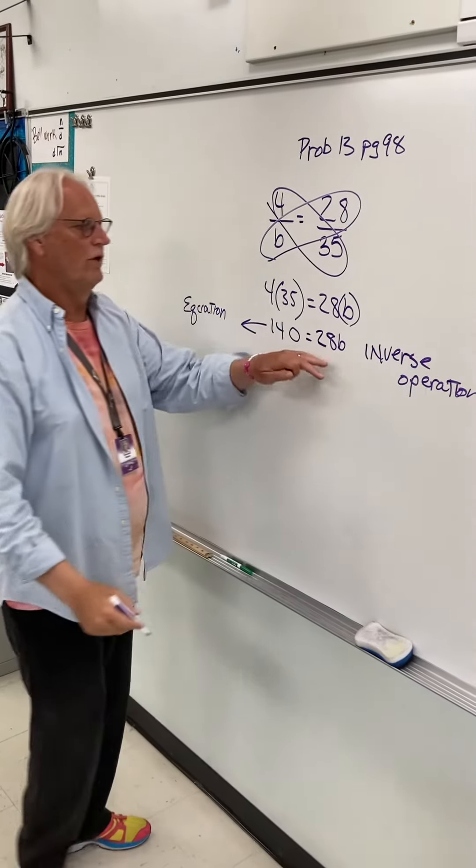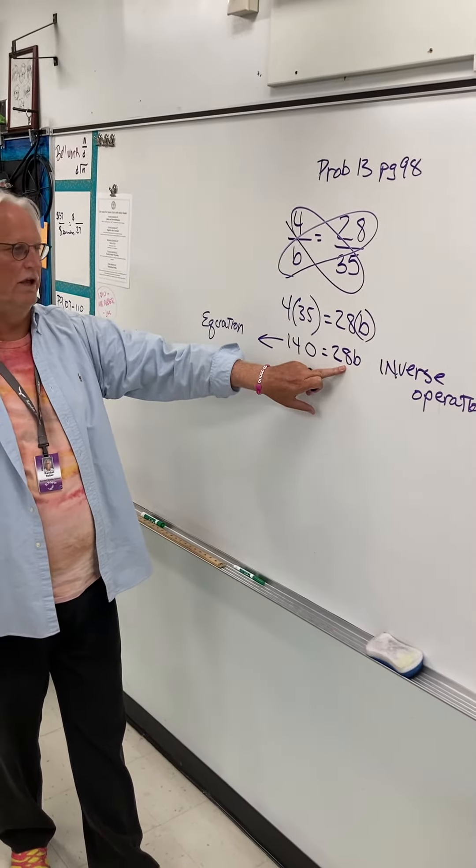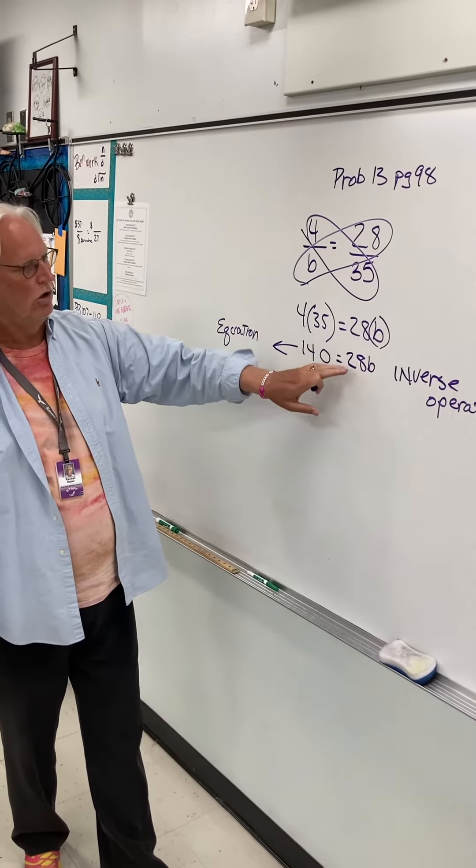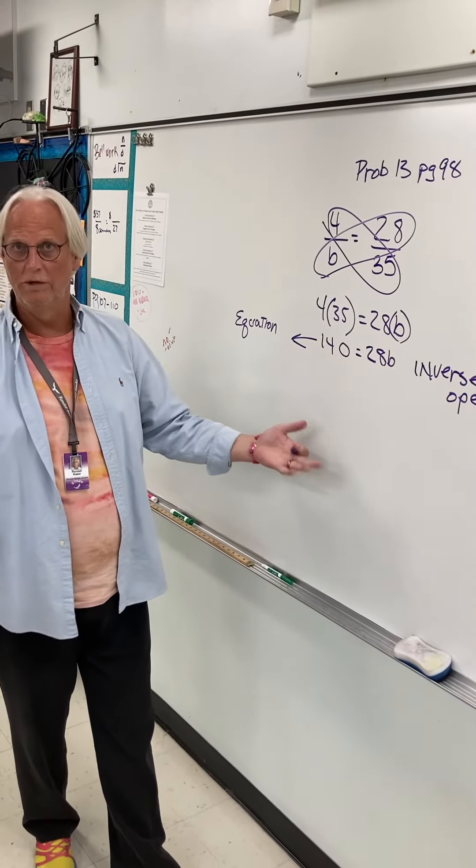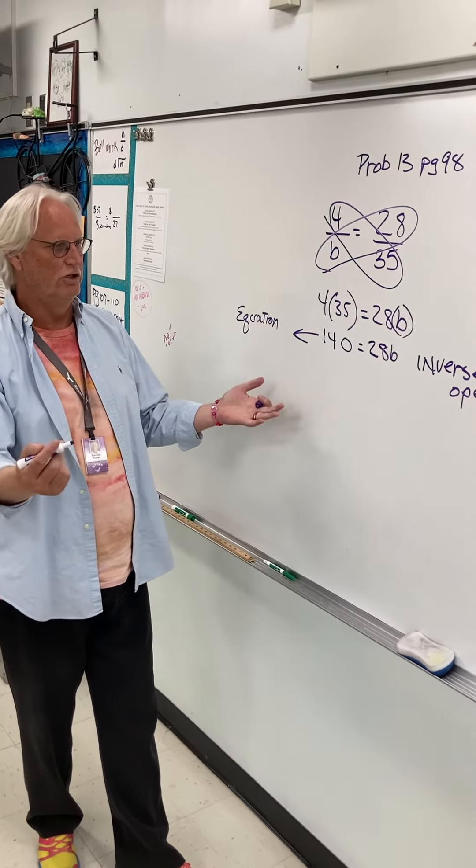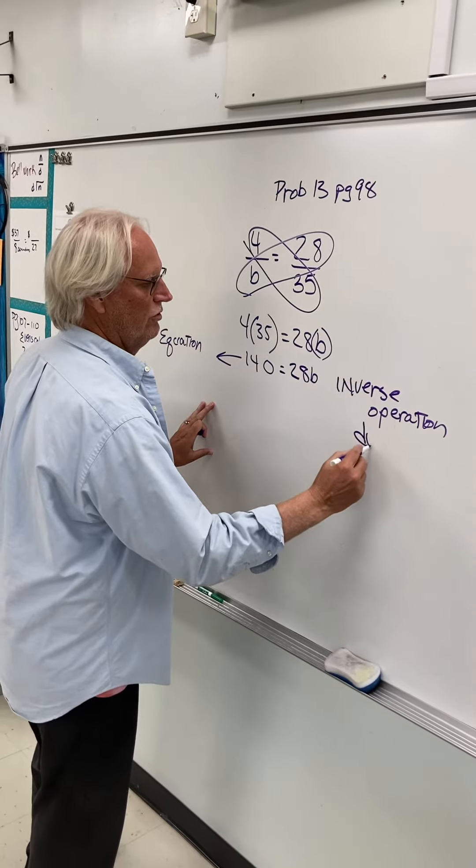And this operation is multiplication because we have a coefficient of 28. We have a variable of b and in between all coefficients and variables is multiplication. So the inverse operation of multiplication is division. The inverse of multiplication we're going to use division.